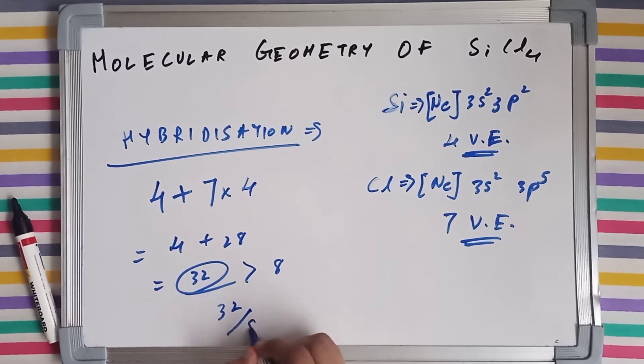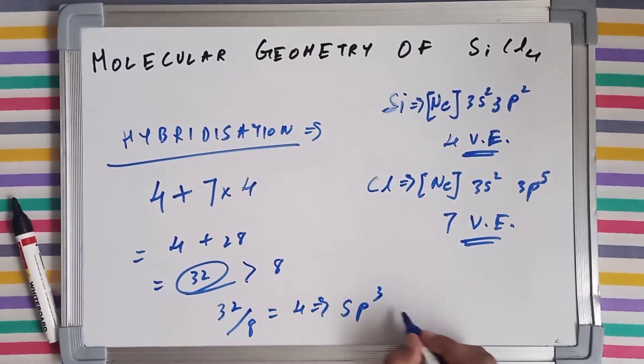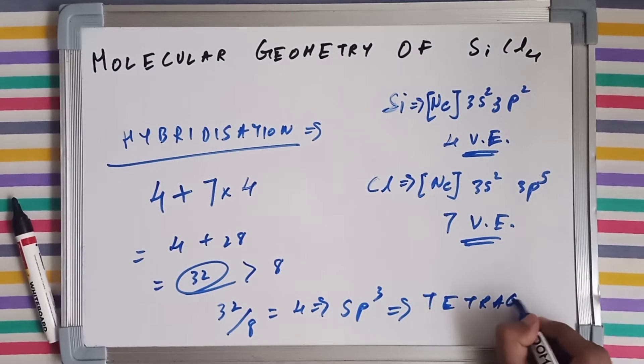So 32 by 8 comes out as 4, which gives us the hybridization sp3, which means its molecular geometry is going to be tetrahedral. Tetrahedral geometry.